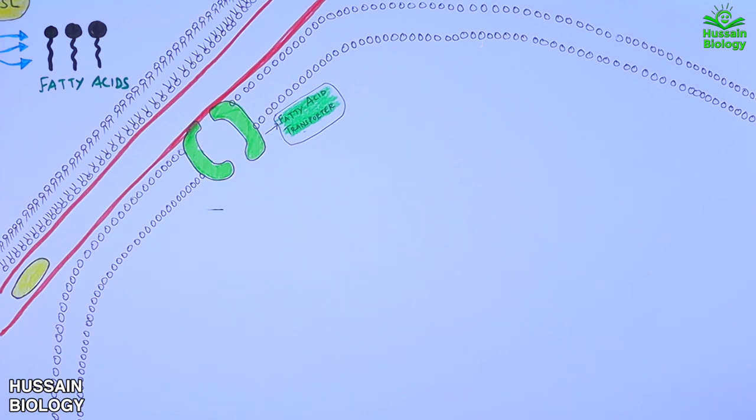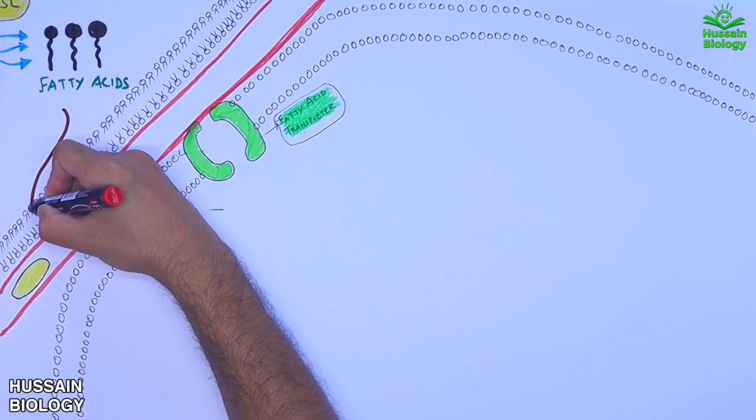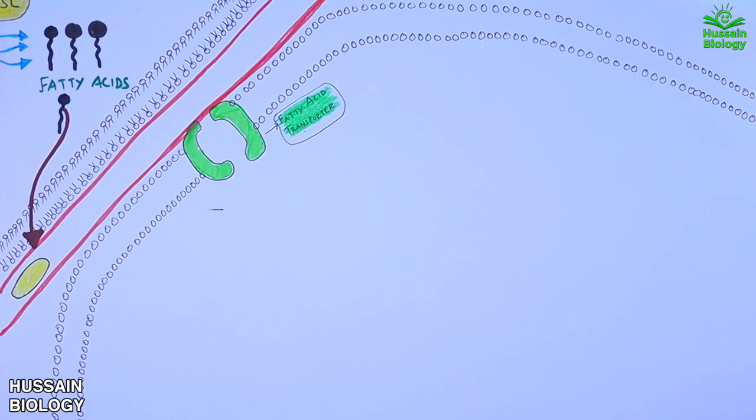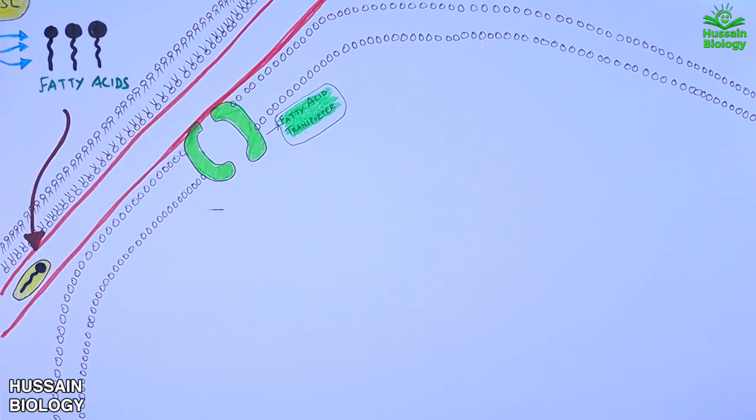First of all, the free fatty acids easily diffuse into the bloodstream where these free fatty acid molecules are taken up by the serum albumin. Then this serum albumin carries it to the myocyte. Here it gives up the free fatty acids and these fatty acids get into the myocyte through the fatty acid transporter.